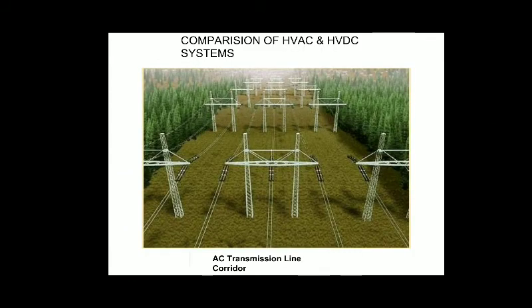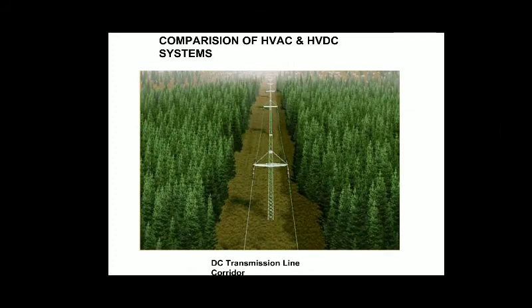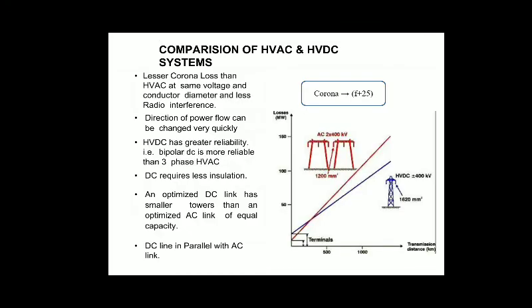Here are some pictures showing an AC transmission line corridor — called a corridor because there are multiple transmission line towers — requiring more land to transmit AC power. But in the case of DC, as seen in the next picture, it needs a narrower space. This is an advantage. Additionally, there is lesser corona loss than HVAC at the same voltage and conductor diameter, and less radio interference.